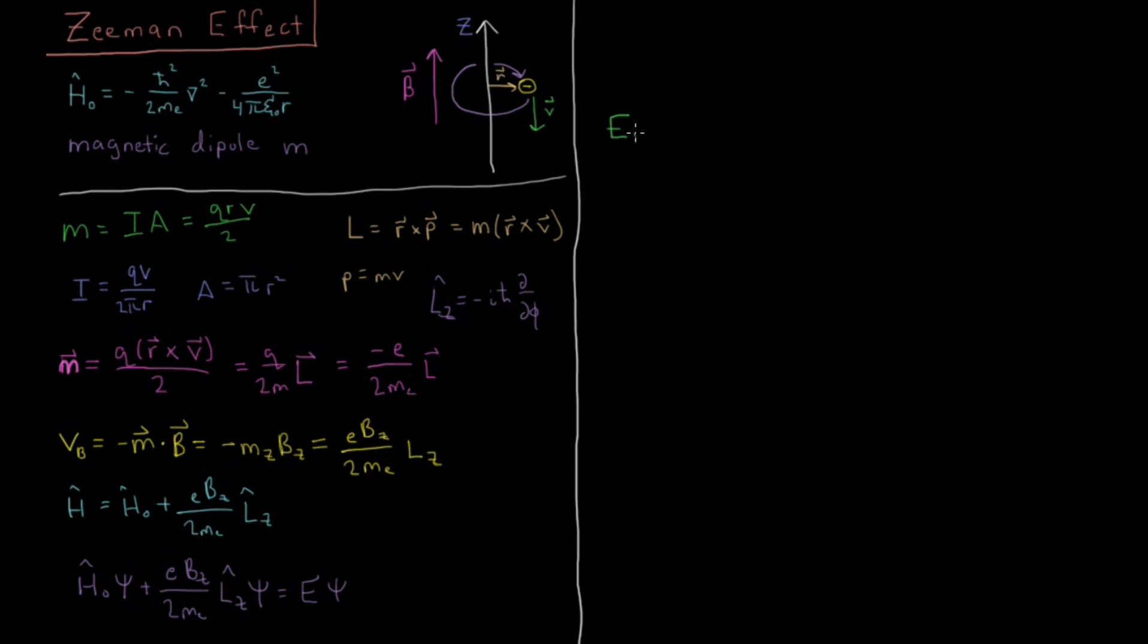So our energies, which are going to depend on n, the quantum number n, and also the quantum number m, the m sub l or m which is often referred to as the magnetic quantum number, possibly the reason why they chose m for it because it interacts with a magnetic field. So that's just the energy of the original Hamiltonian, me⁴ over 8ε₀²h²n², and then plus this constant βB times m, the magnetic quantum number m, times the strength of the magnetic field in the z direction, which is Bz.